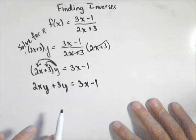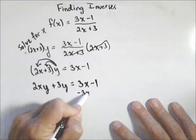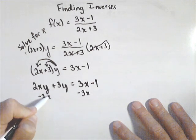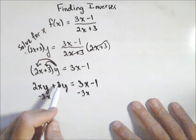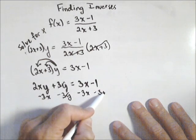Now I can move all the terms around. I'm going to put both terms with x on the left-hand side, so I'm going to subtract 3x off both sides. And anything without an x, I'm going to put on the other side, so minus 3y.